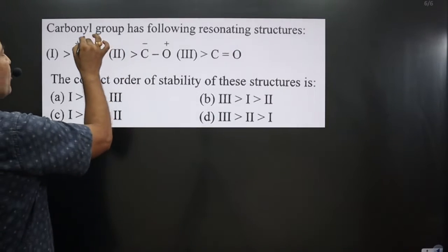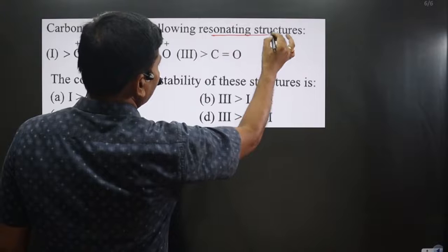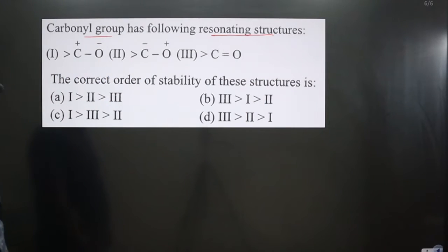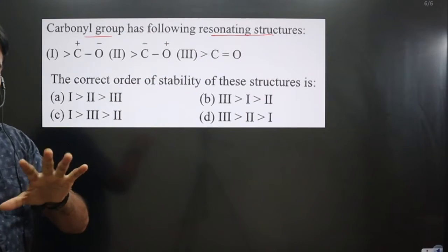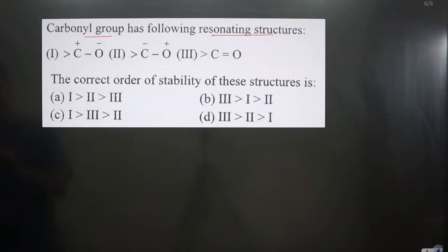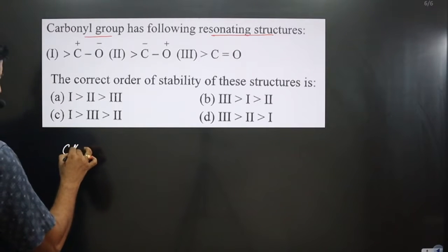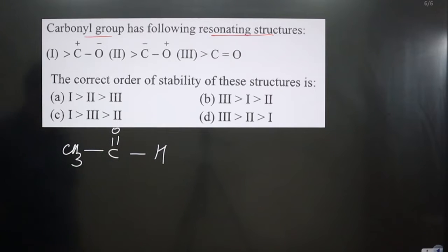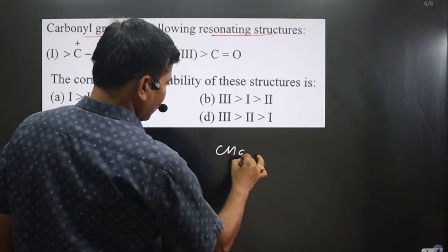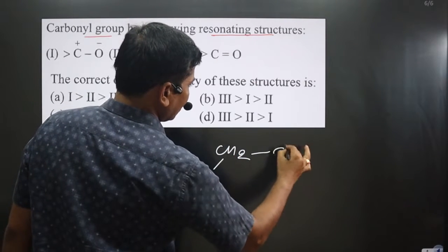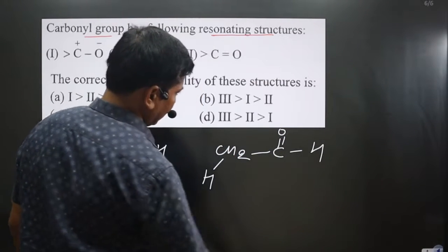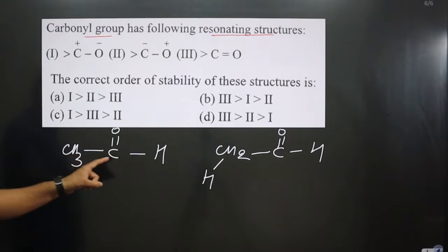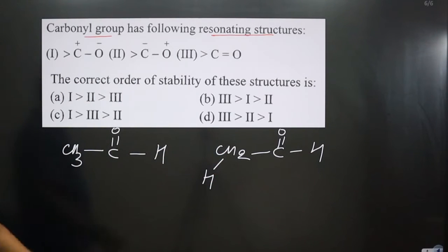The question says the carbonyl group has the following resonating structures. Let me take one carbonyl compound — say we have CH3, C double bond O, and H. In this case we can have resonance: CH2 with H, and C double bond O with H. This compound can be written in this format also.